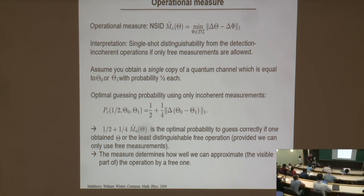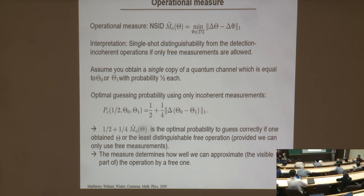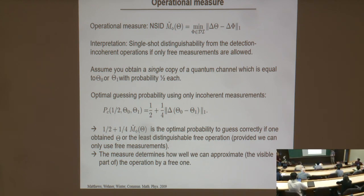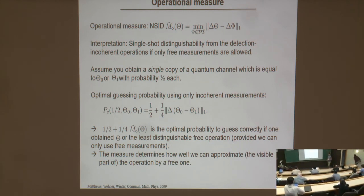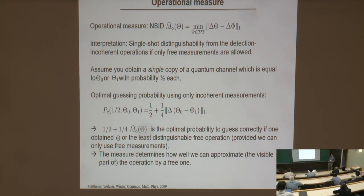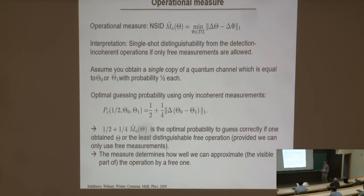Question: Starting from this, could you also consider a Chernoff-bound-like multi-copy setting? Answer: Sure, you can consider asymptotic multi-copy settings. The usual quantities to try first would be the relative entropy or Chernoff bound type quantities. At the moment I don't know anything definitive about this.